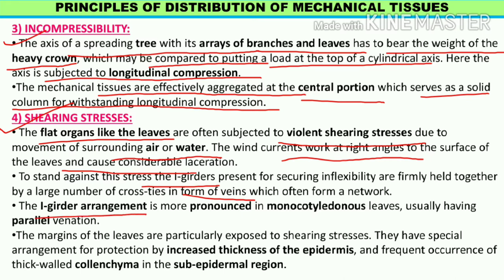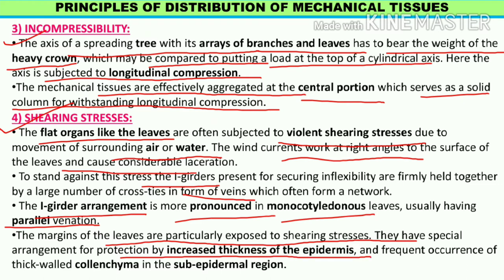This arrangement is very pronounced in both monocots and dicots. In monocots, strength is provided equally because they have parallel venation, and in dicots the reticulate venation provides the support. The margins of the leaves are particularly exposed to sharing stresses - they have a special arrangement of increased thickness of epidermis for protection.